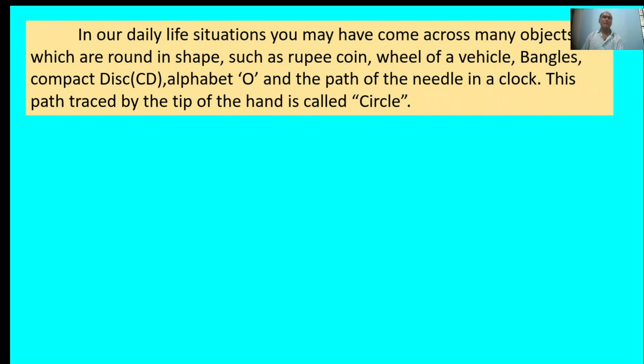In our daily life situations, you may have come across many objects which are round in shape, such as a rupee coin, wheel of a vehicle, bangles, compact disc, the alphabet O, and the path of the needle in a clock. This path traced by the tip of the hand is called a circle.